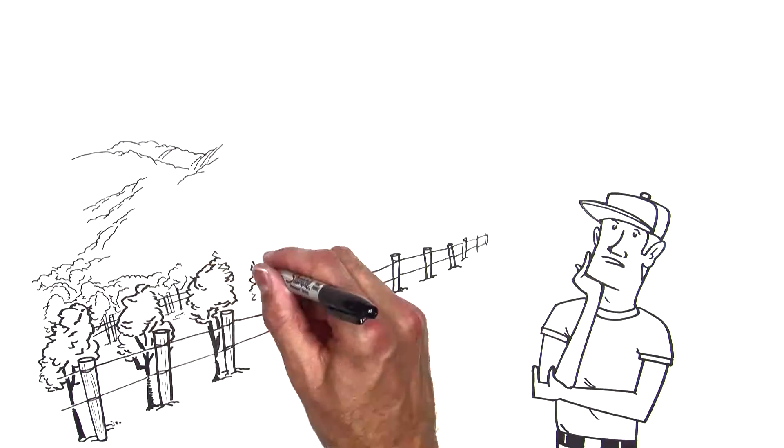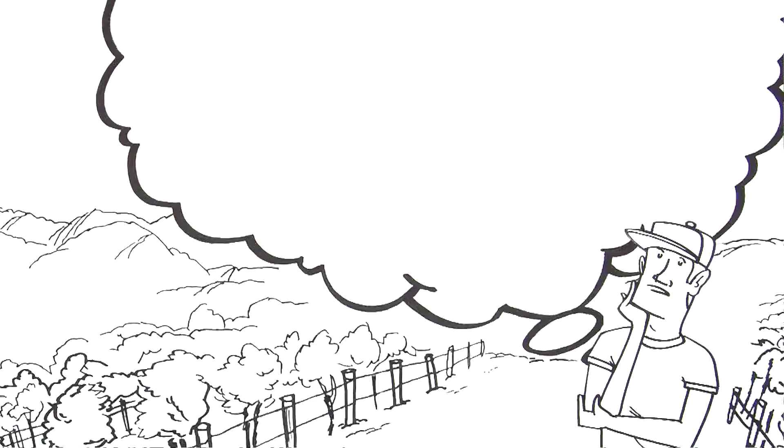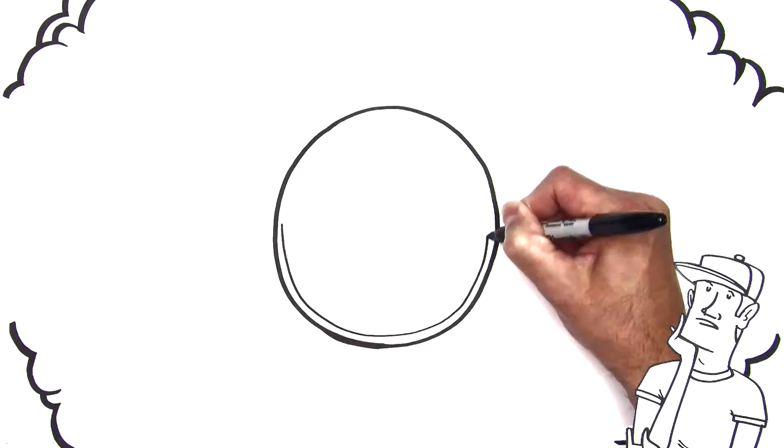What if you could design the perfect drip line emitter for your vineyard? It might look something like this.